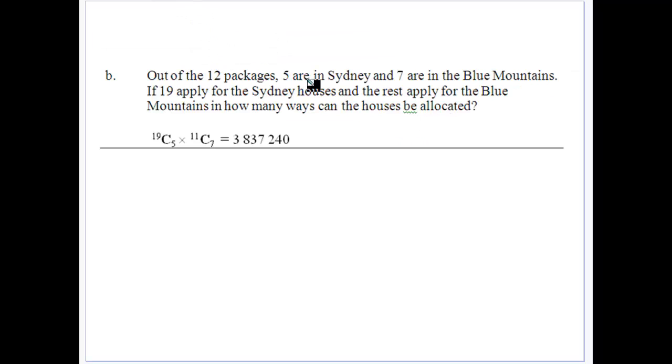Out of the 12 packages, five are in Sydney, seven in the Blue Mountains. 19 apply for the Sydney houses. The rest apply for Blue Mountains. How many ways can the houses be allocated? So that would be 19C5 because you've got 19 people applying for Sydney and only five. How many ways can we get groups of five out of groups of 19? And out of the 11 Blue Mountains packages, there's seven to be had there. So there's 11C7 groups of seven out of 11 there, which gives us 3,837,240.